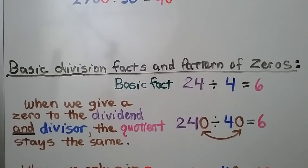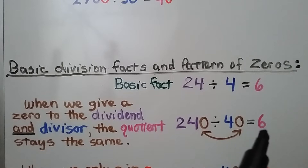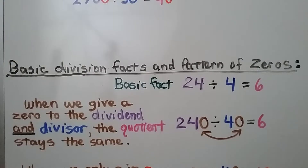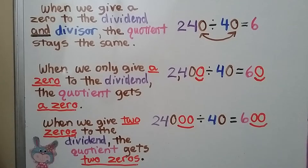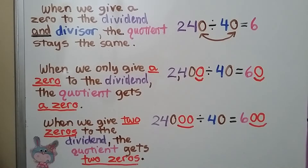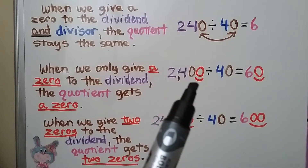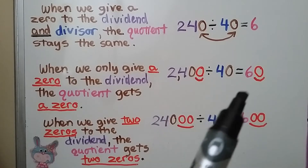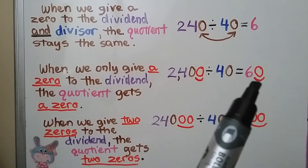There's another way to look at the pattern. When we give a zero to both the dividend and the divisor, the quotient stays the same — 240 divided by 40 is still equal to 6, because we gave a zero to both. But if we keep the divisor at 40 and add an extra zero only to the dividend, our quotient is going to have an extra zero. It'll be 60.